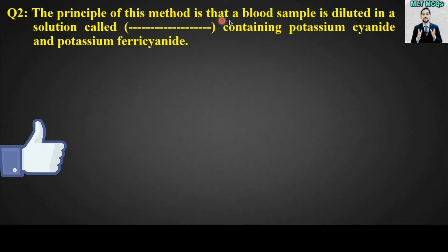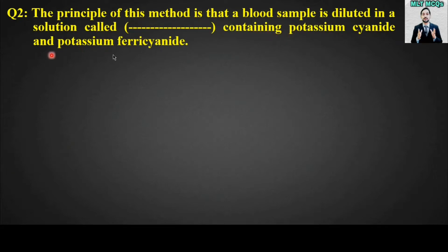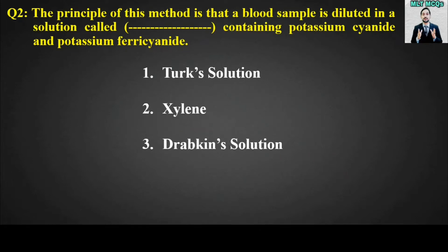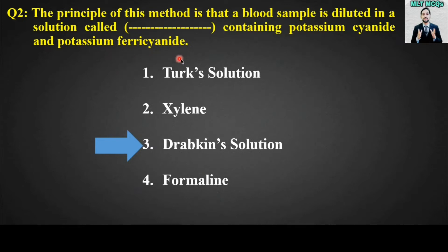MCQ number two: The principle of this method is that a blood sample is diluted in a solution containing potassium cyanide and potassium ferricyanide. What is the name of that solution? Options are: Turk solution, xylene, Drabkin's solution, or formalin. The right answer is option number three — Drabkin's solution contains potassium cyanide and potassium ferricyanide for the dilution of blood for Hb estimation.